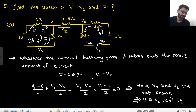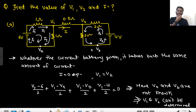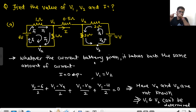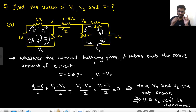V1 and V2 cannot be determined. The potential of these two points — you don't really know. So here V1 and V2 cannot be determined. But the current will be zero, because I1 current flows in the complete loop and I2 current flows in the complete loop.